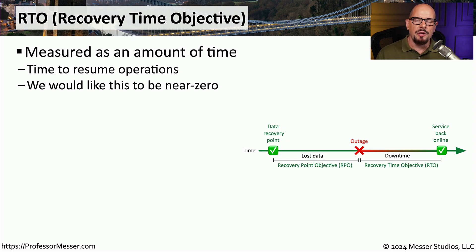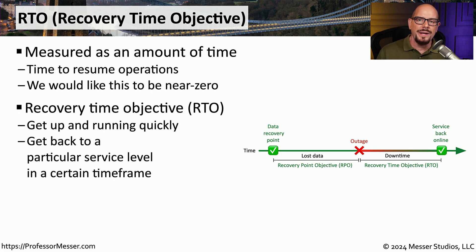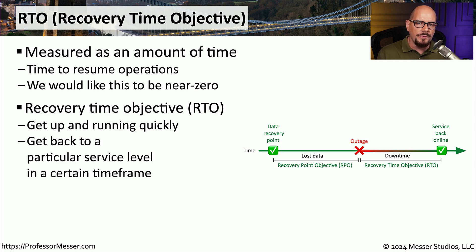There are many different metrics that can help us understand the scope and breadth of an outage. One of these metrics is a recovery time objective, or RTO. This is an amount of time, and we want this RTO to be as close to zero as possible. RTO is a measurement of how quickly we can get back up and running if an outage occurs. We define what a normal service level would be, then calculate how long it will take to reach that service level — that gap in time is the RTO. For example, if our web server fails, the normal recovery time objective for it becoming available again might be approximately one hour.